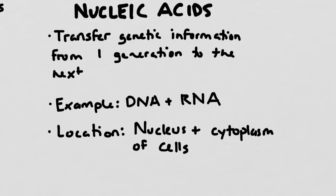So let's begin with nucleic acids. The point of nucleic acids is to transfer genetic information from parent to offspring, or from one generation to the next. And the two that you're most familiar with are probably DNA and RNA. Now usually we find nucleic acids in the nucleus of the cell, which is also sometimes called the control center of the cell, but sometimes we find them out in the cytoplasm as well.